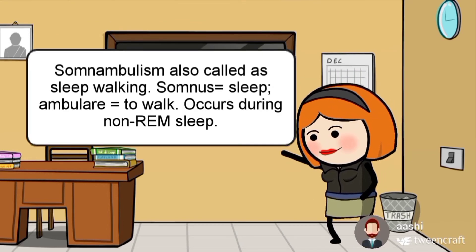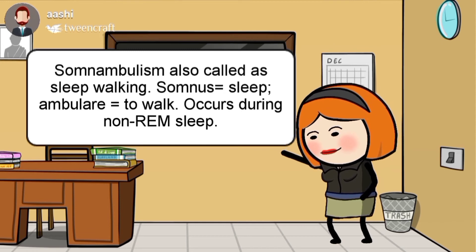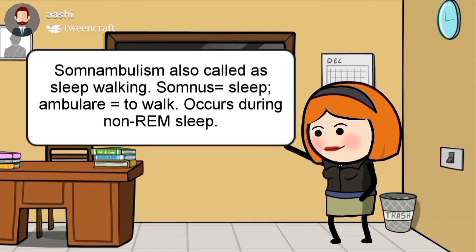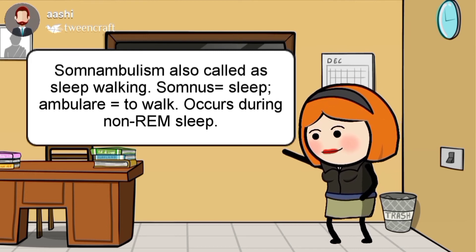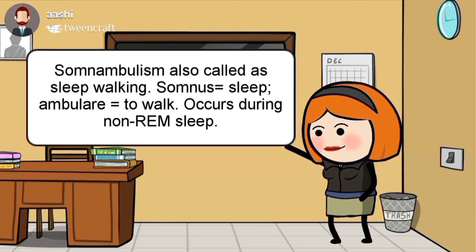Somnambulism is getting up from bed and walking in a state of sleep, also called sleepwalking. Somnus means sleep; ambulare means to walk. It varies from just sitting up in bed to walking around with eyes open and performing complex tasks. The episode lasts from a few minutes to half an hour and occurs during non-REM sleep. In children, it is associated with bed wetting or night terror without psychological disturbance; however, in adults, it is associated with psychoneurosis.